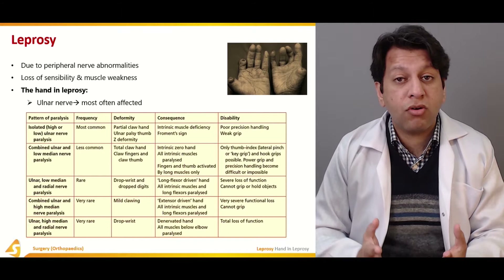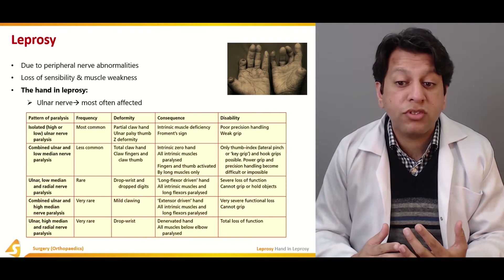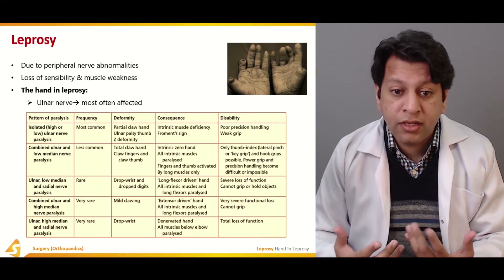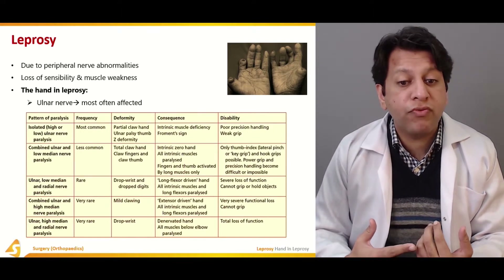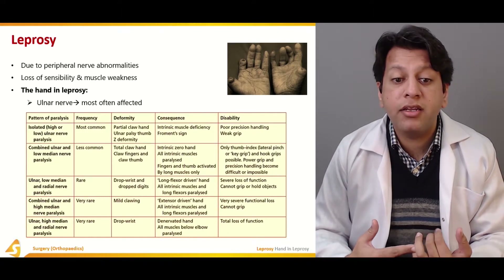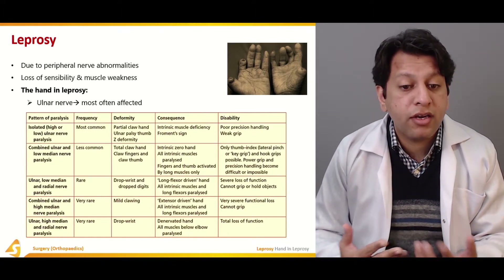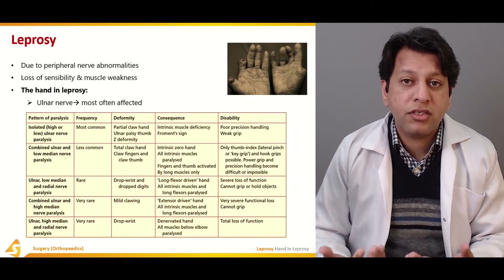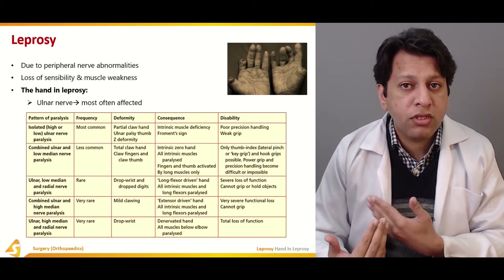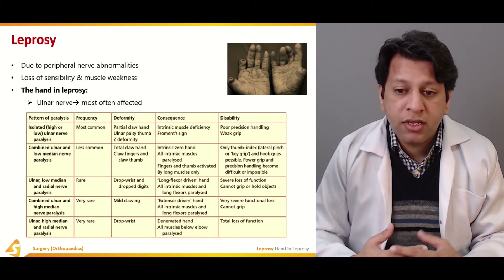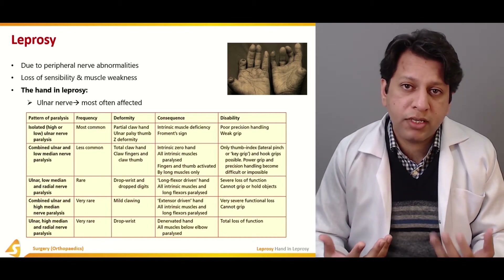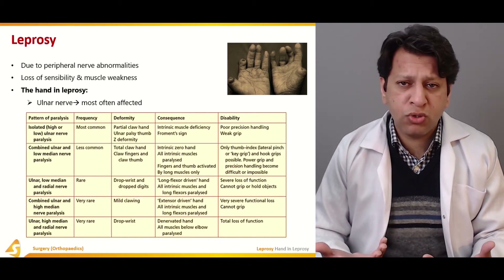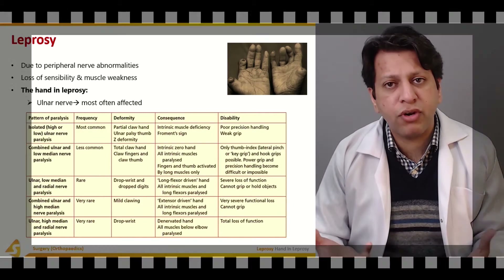When all three nerves are lost, there is severe loss of function and the patient cannot grip or hold objects. An even rarer form involves high ulnar, high median, and radial nerve palsies, affecting all three nerves up in the arm. This triple nerve involvement leads to total loss of function below the elbow joint, resulting in a flail hand.